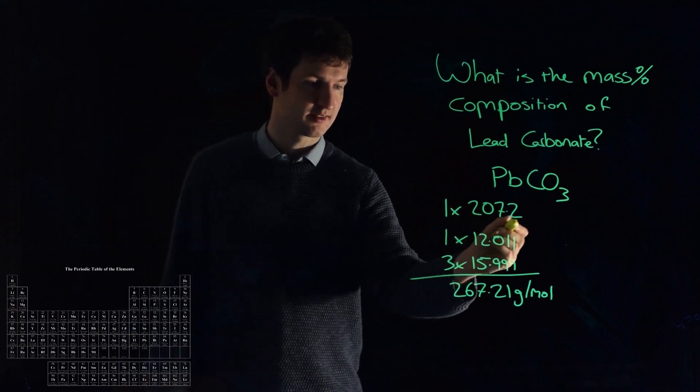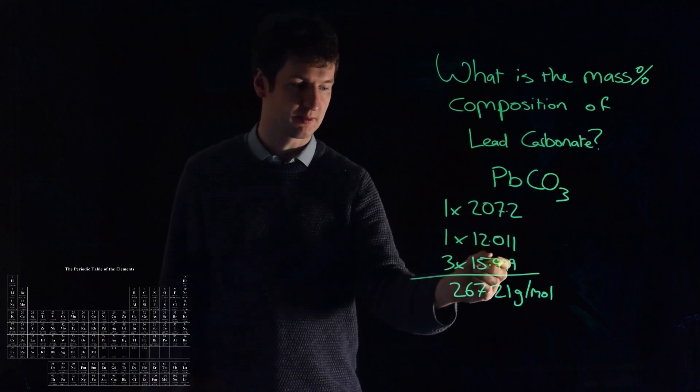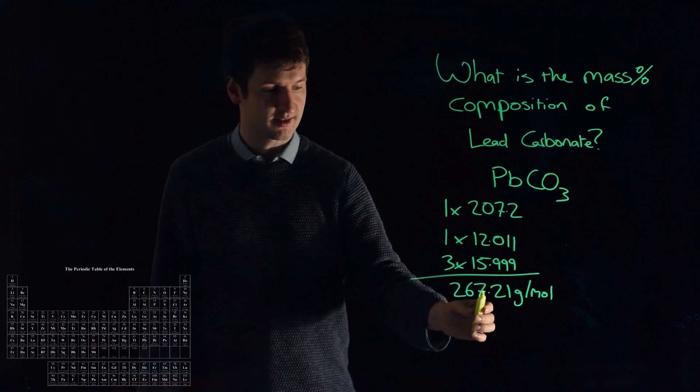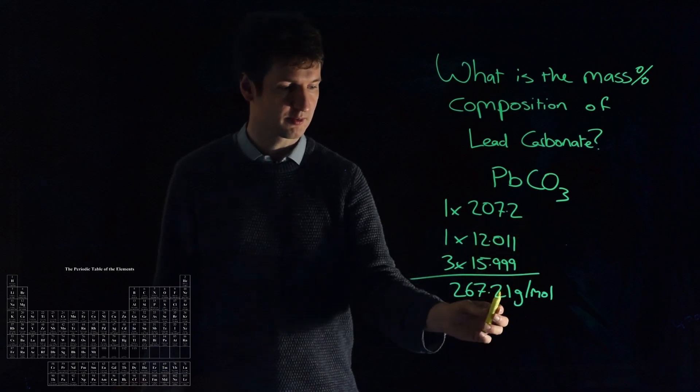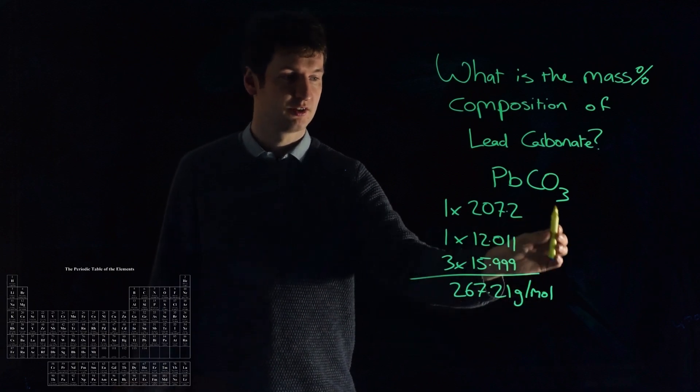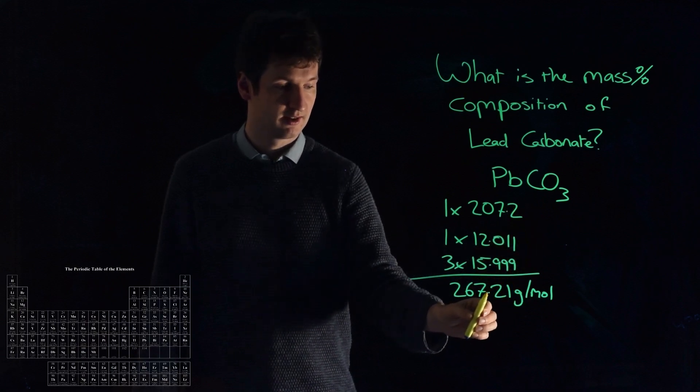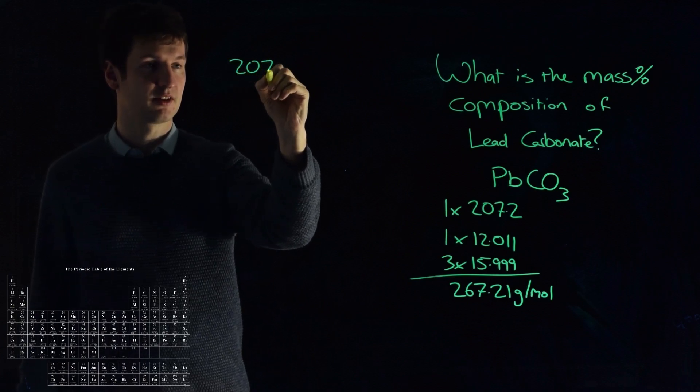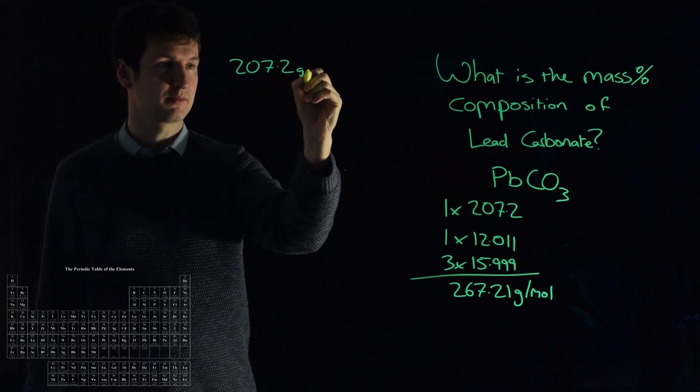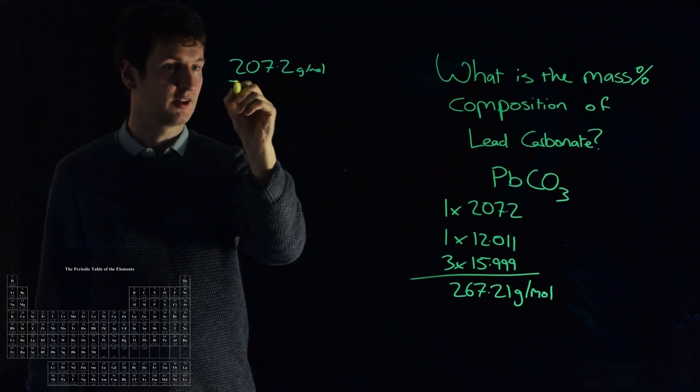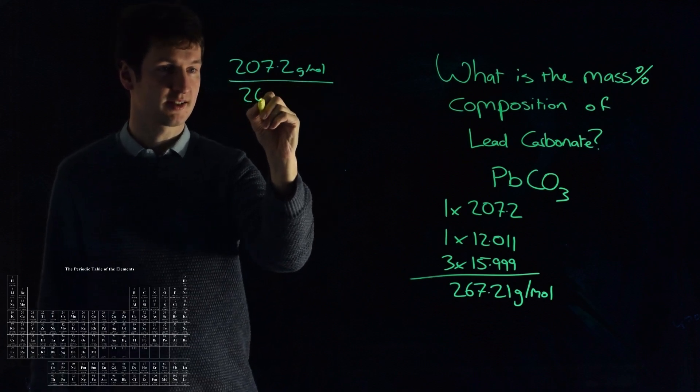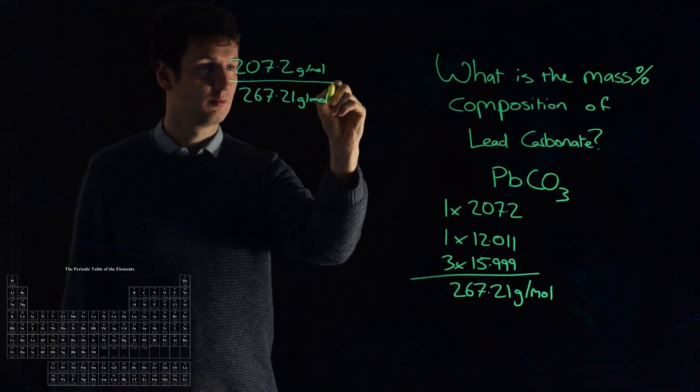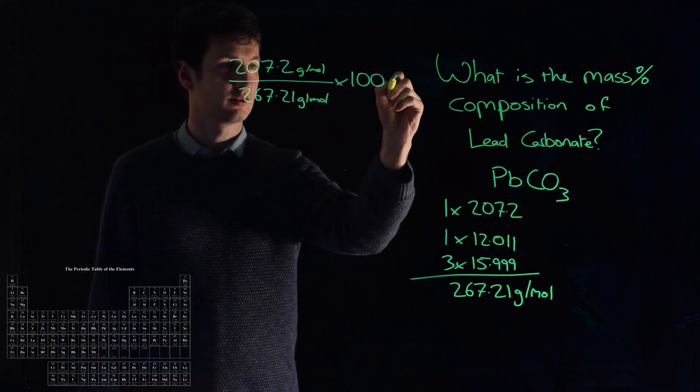All we have to do is take the mass accounted for inside that for each element and express it as a percentage. So we know that inside this 267 grams per mole, one mole of this weighs 267 grams, 207.2 grams of that are lead. So what percentage is lead? It'll be 207.2 grams per mole divided by 267.21 grams per mole multiplied by 100%.